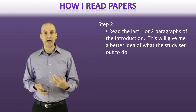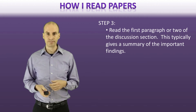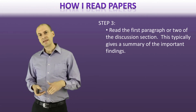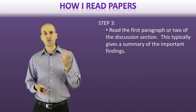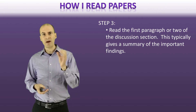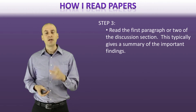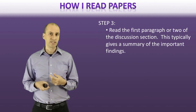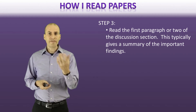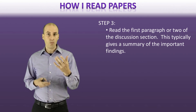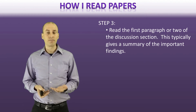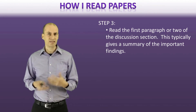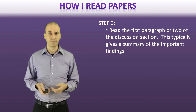Step two is seeing whether the paper is asking a question that you care about. Step three: I skip all the way to the end of the paper and look at usually the first paragraph of the discussion section. The first one or two paragraphs of the discussion often present the findings of the study, so I'll skim that quickly to see if those findings are something I'm interested in.